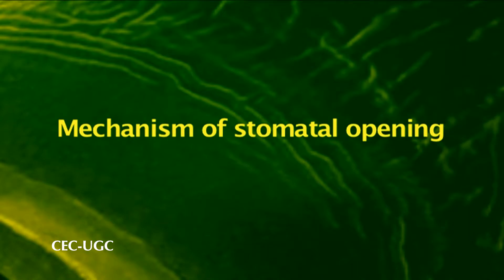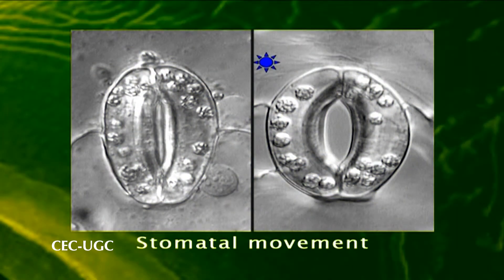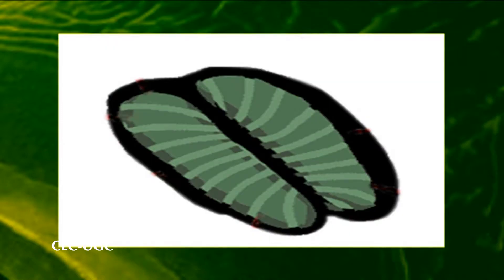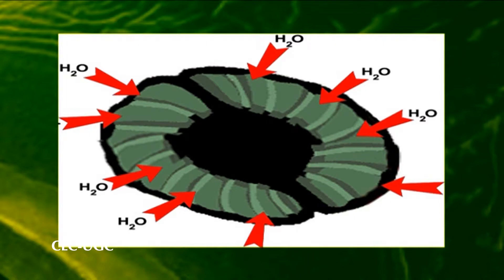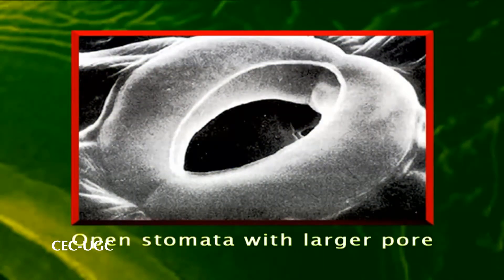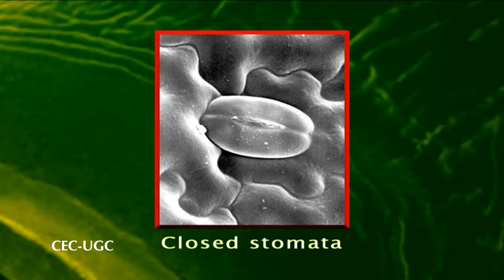Stomata function as turgor-operated valves because their opening and closing movement is governed by turgor changes of the guard cells. Due to endosmosis, an increase in turgor of guard cells takes place, which finally results in stretching and bulging out of their outer thin walls. This results in the pulling apart of the opposite inner thicker walls, creating an opening or pore in guard cells of stomata. When the turgor pressure of guard cells decreases, inner walls sag, leading to closure of the space between them. This is due to the loss of water or exosmosis from guard cells, resulting in thicker walls moving closer and finally shutting the opening.